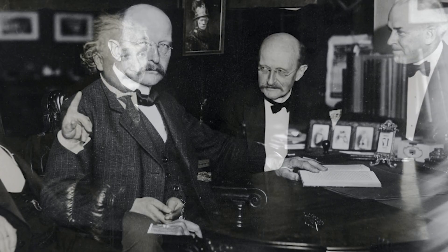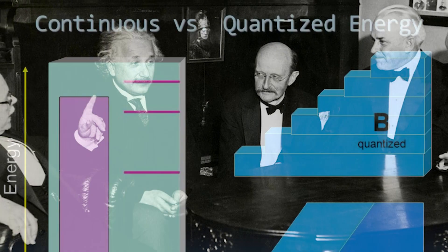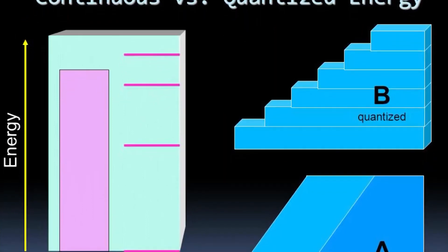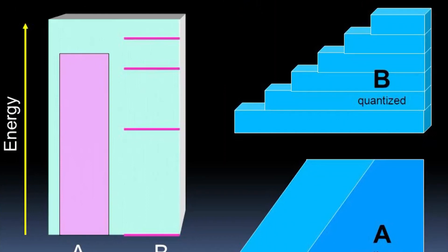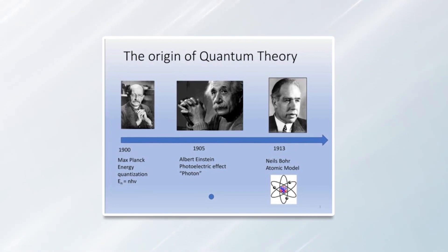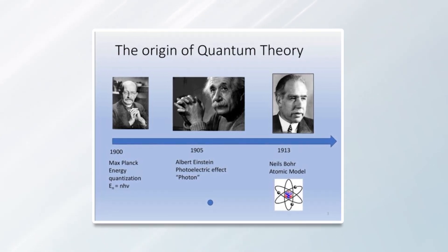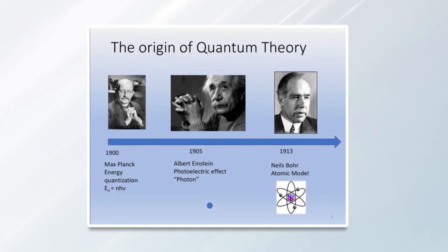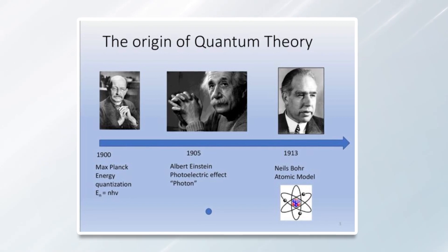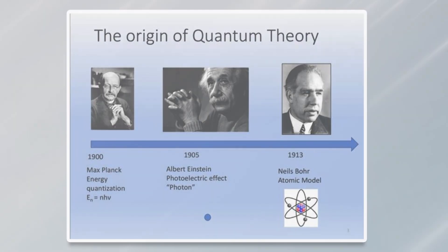He is the father of quantum physics. Through physical experiments, Planck demonstrated that energy in certain situations can exhibit characteristics of physical matter. Planck's theory held that the radiant energy is made up of particle-like components known as quanta. The theory helped to resolve previously unexplained natural phenomena such as the behavior of heat in solids and the nature of light absorption on an atomic level. In 1918, Planck was awarded the Nobel Prize in Physics for his work on black body radiation.